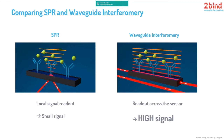Waveguide interferometry, as a principle, uses a readout that is across the complete sensor. This is done by coupling a reference beam and a sample beam, allowing you to analyze the complete chip, which grants a higher signal. Technically, this is really challenging to develop and produce, which is also the reason why SPR is the more common principle.